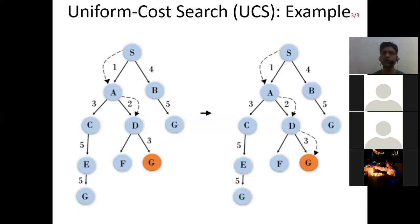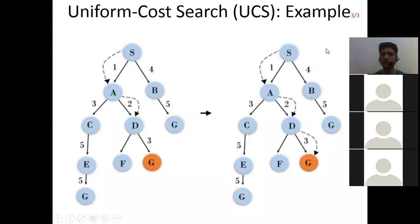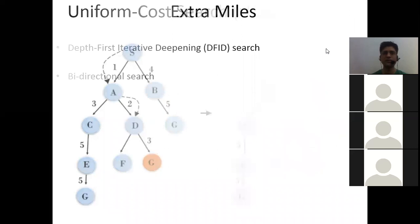This is how uniform cost search works — we look for only the lowest cost and then look for the cumulative cost. The path S to A to D to G gives a cumulative cost of 1 plus 2 plus 3, which equals 6. All possible paths will be calculated and we will look for the cumulative cost which is minimum. This is how uniform cost search works.